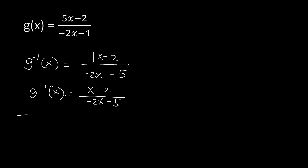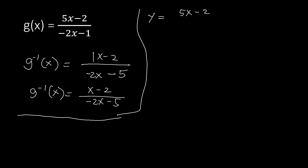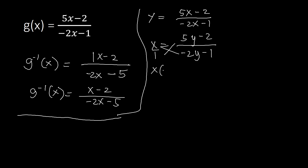Let's verify using the long process. Step one: y equals 5x minus 2 over negative 2x minus 1. Step two: swap to get x equals 5y minus 2 over negative 2y minus 1. Since the right side has denominator 1, we cross multiply: x times (negative 2y minus 1) equals 5y minus 2.